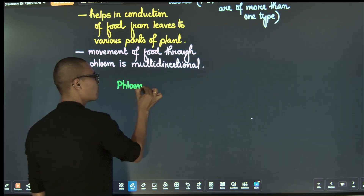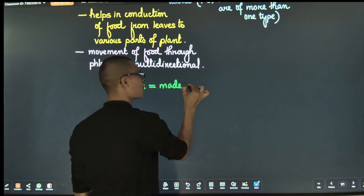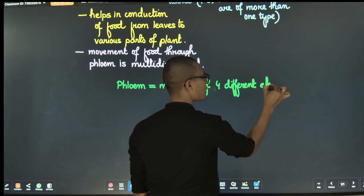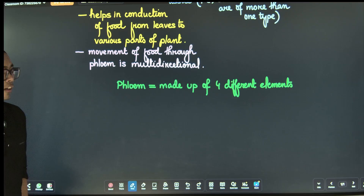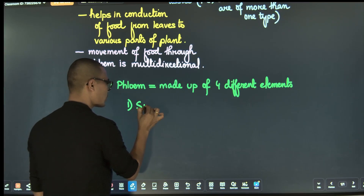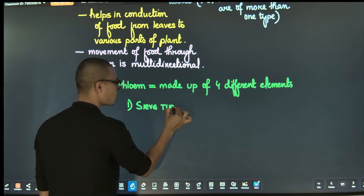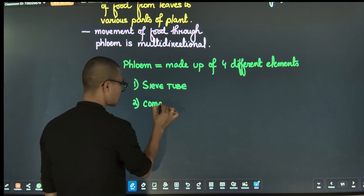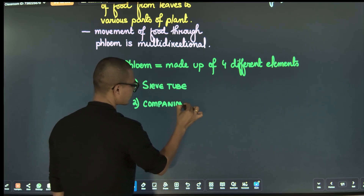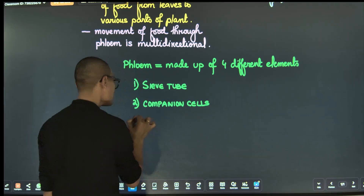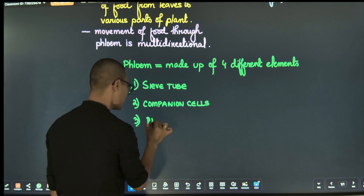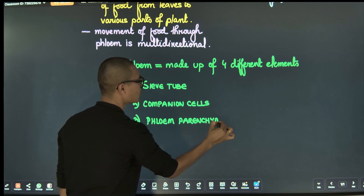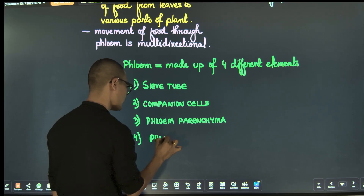Phloem is a complex permanent tissue. It is made up of four different kinds of cells — four different elements. The first one is called sieve tube elements. The second one is companion cells. The third is phloem parenchyma. And the fourth is phloem fibers.